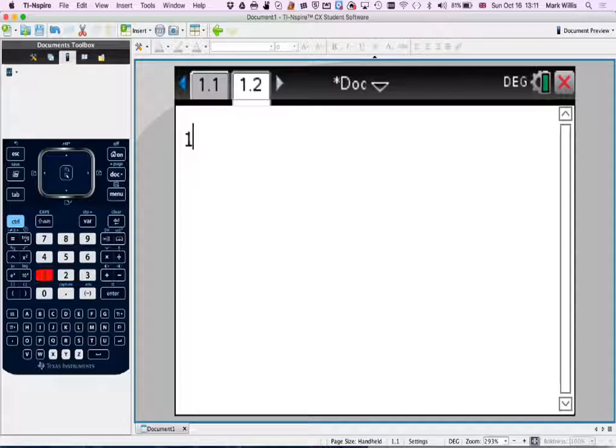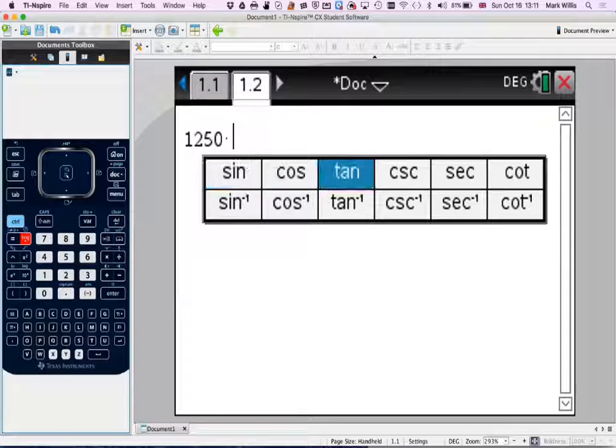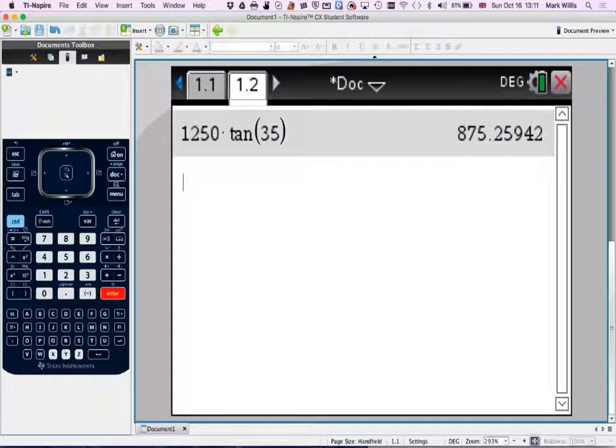And then typing in 1250 times trig tan of 35, and then press enter, and we get 875.